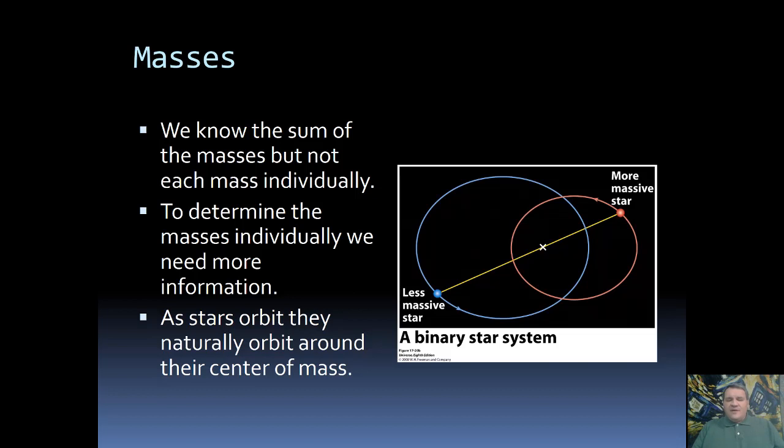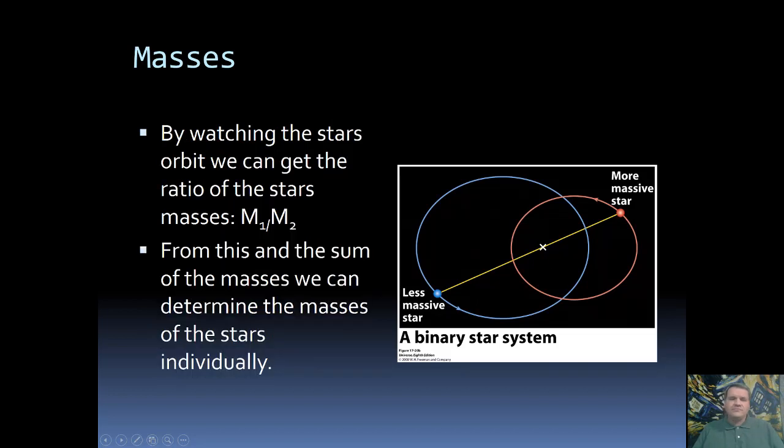So as we look at these stars, we can actually start to figure out which one's more massive and which one's less massive by looking at their distance from the center of mass. Whichever star is bigger will be closer to the center of mass, and whichever one is smaller will be farther from that center of mass. As we watch these two stars orbit around the center of mass, we can determine the ratio of the two masses. So we have the sum and we have the ratio. That's enough information to then figure out each star individually.